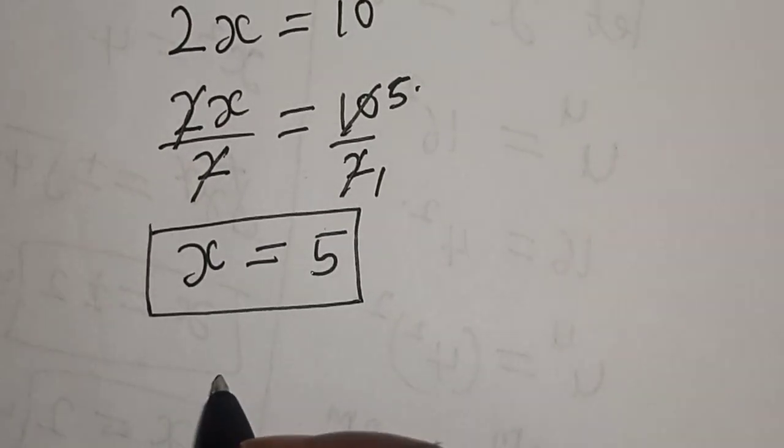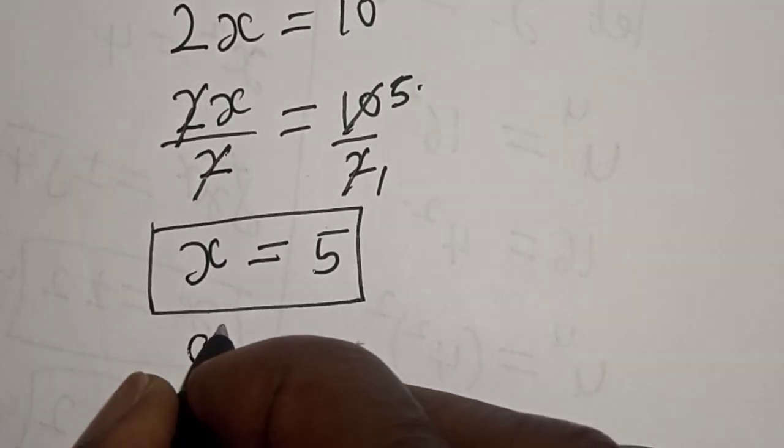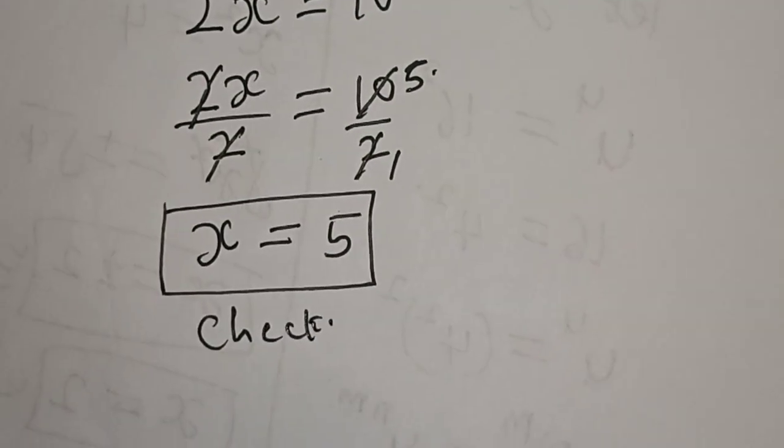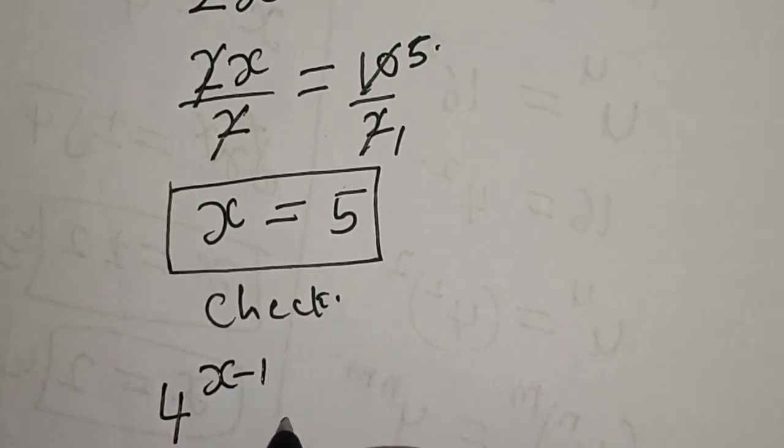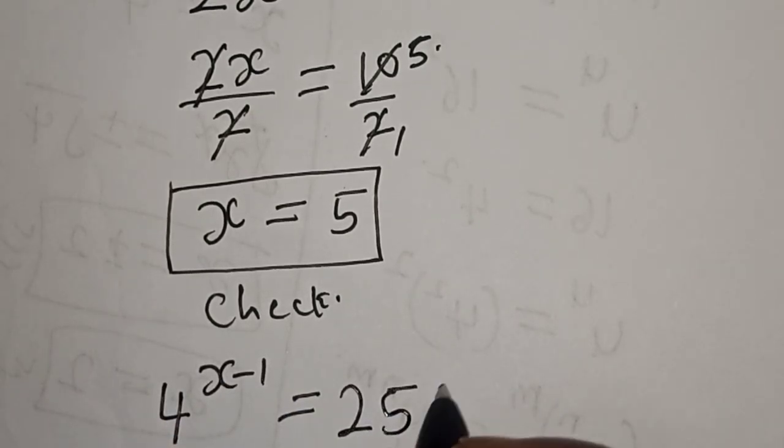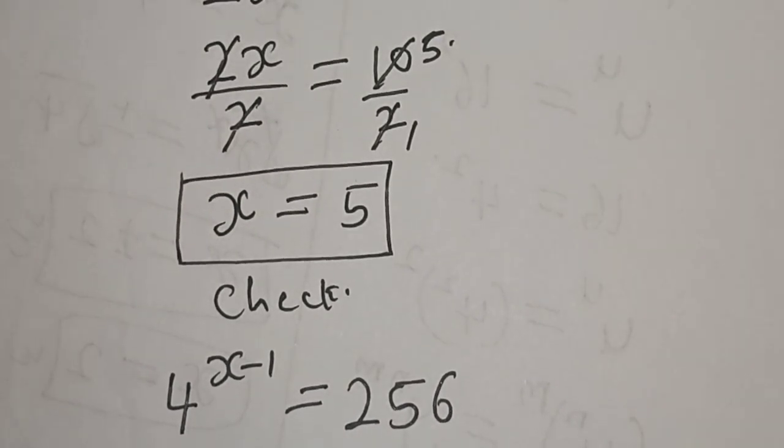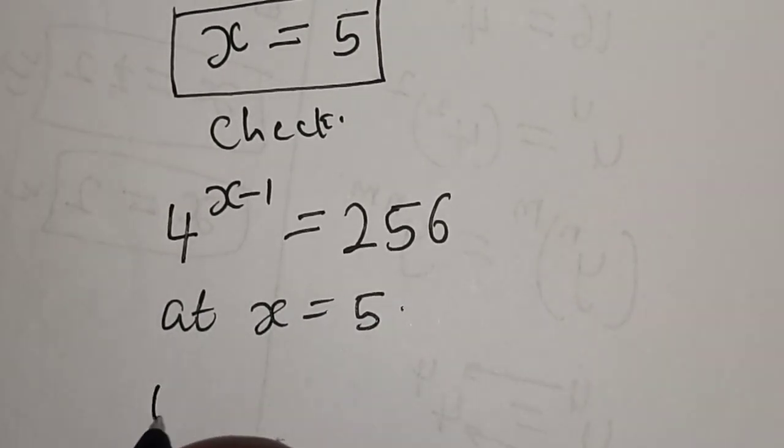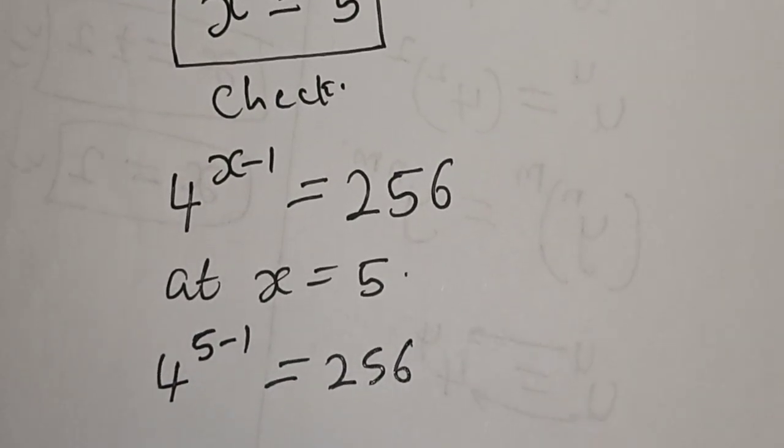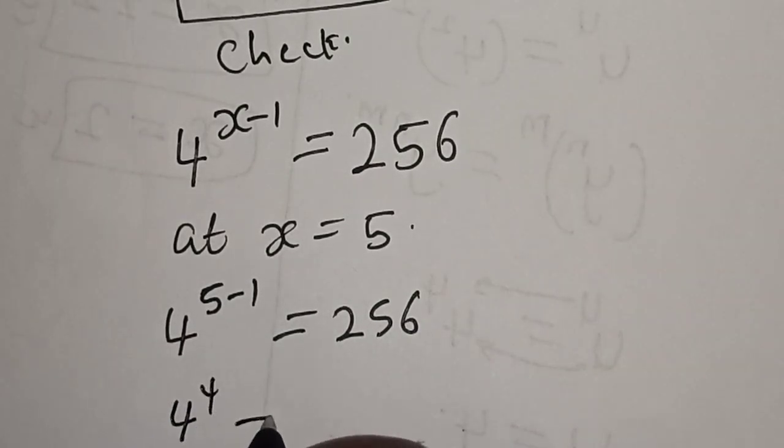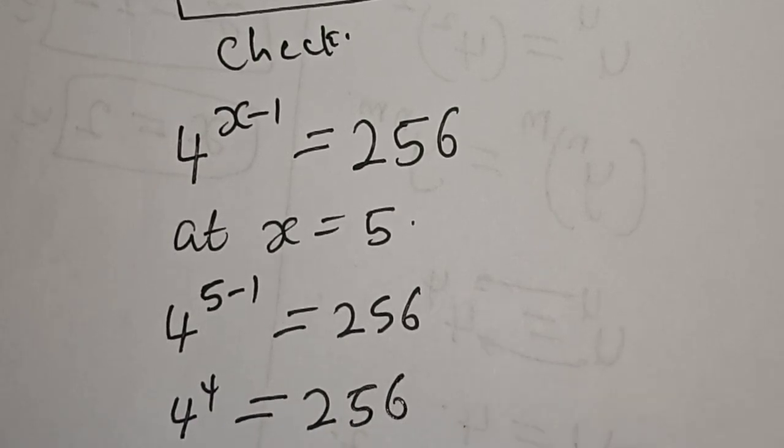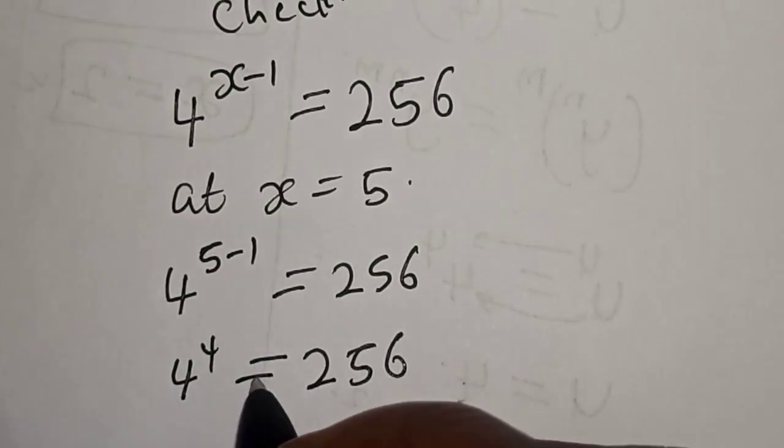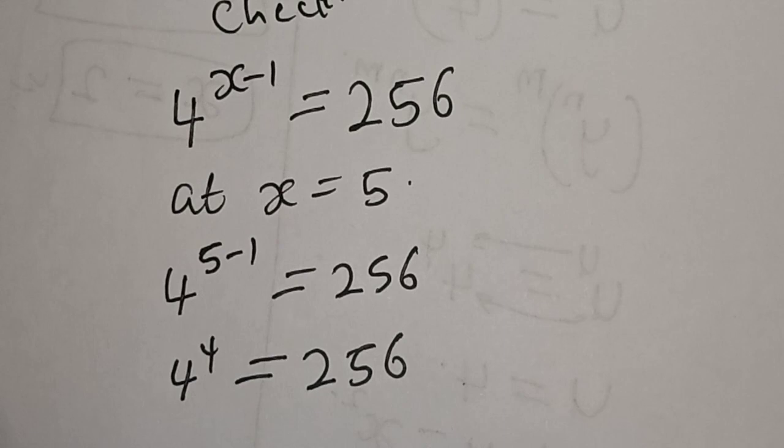Now let's check to confirm our answer. We have the given equation 4 raised to power x minus 1 is equal to 256. At x equal to 5, we have 4 to the power 5 minus 1 is equal to 256. Therefore, 4 to the power 4 is equal to 256, which satisfies the given equation at x equals 5.